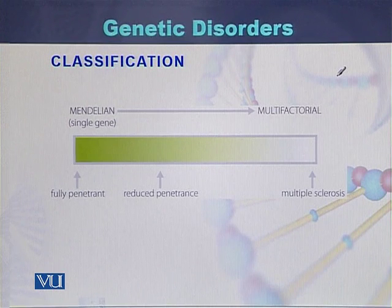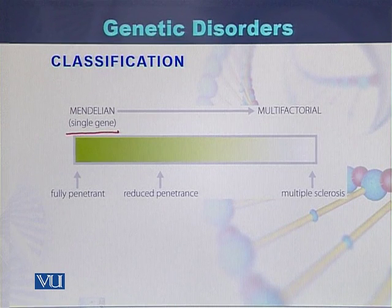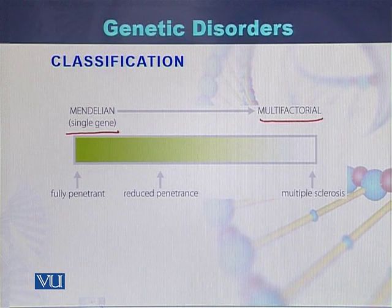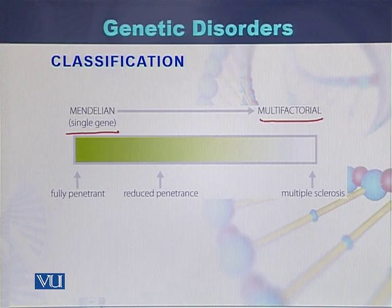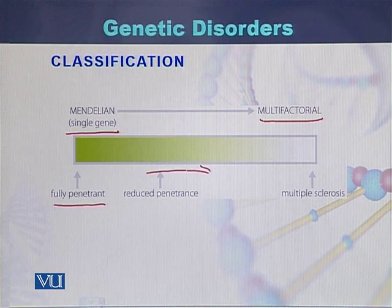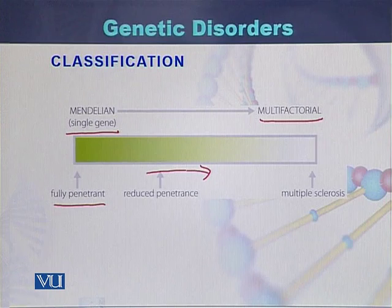Mendelian disorders are caused by a single gene. Multifactorial diseases are caused by more than one gene — that can be two genes, or one gene with an environmental influence. Mendelian disorders, also called single gene disorders, are fully penetrant. In contrast, multifactorial diseases show reduced penetrance.